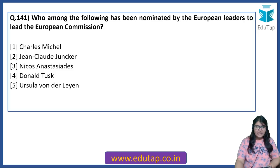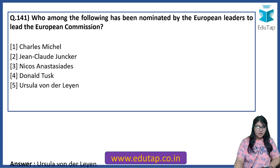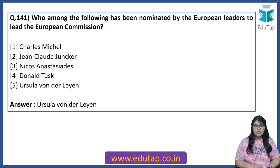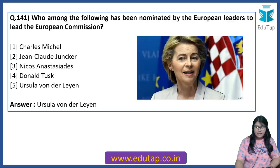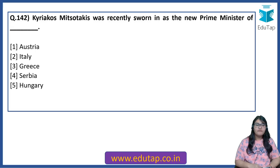Who among the following has been nominated by European leaders to lead the European Commission? The answer is Ursula von der Leyen — she is Germany's Defense Minister and has been nominated by European leaders to lead the European Commission. Kyriakos Mitsotakis was recently sworn in as the new PM of Greece.